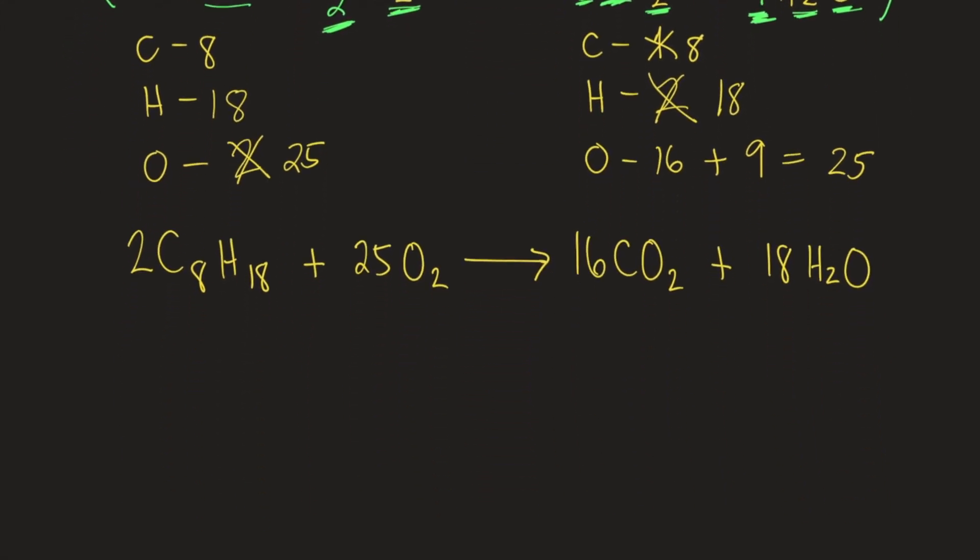Now let's check if this reaction is really balanced. Let's count quickly the number of C, H, and O on both the left and the right sides. So let's start with carbon. On the left side, we have 2 times 8, that's 16. On the right side, 16 times 1, that's also 16. So carbon is balanced.